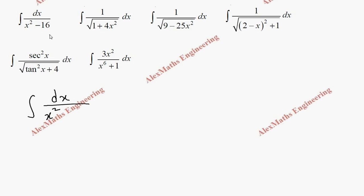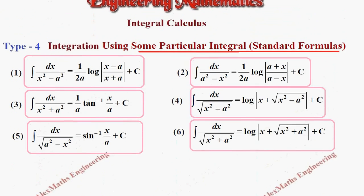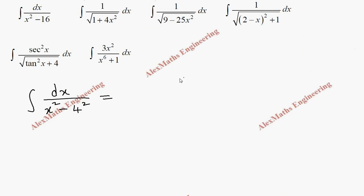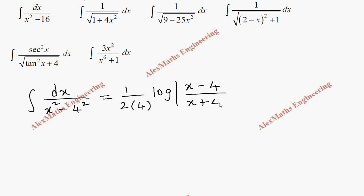Question 1: ∫dx/(x²−16). This can be written as x²−4², so this is of the form x²−a², which is Formula 1: (1/2a) log|(x−a)/(x+a)| + C. Here a = 4, so this becomes (1/(2×4)) log|(x−4)/(x+4)| + C, which gives us (1/8) log|(x−4)/(x+4)| + C.